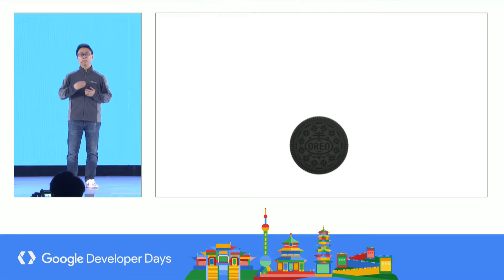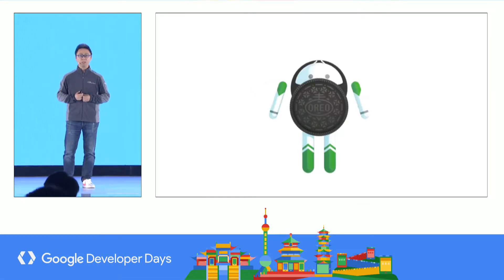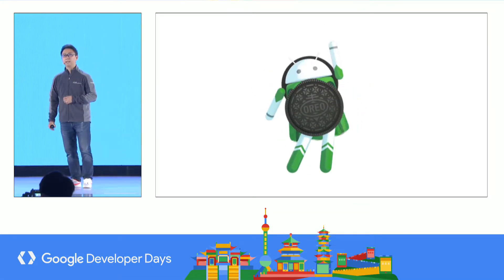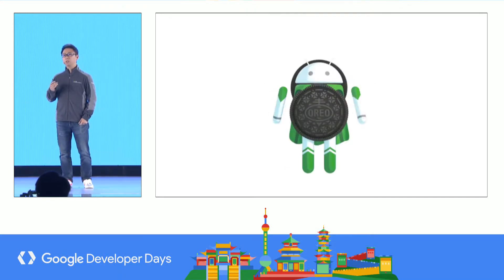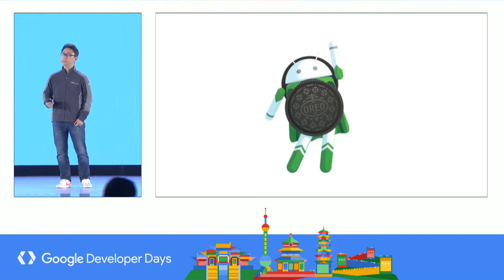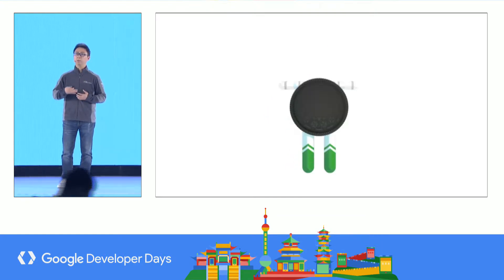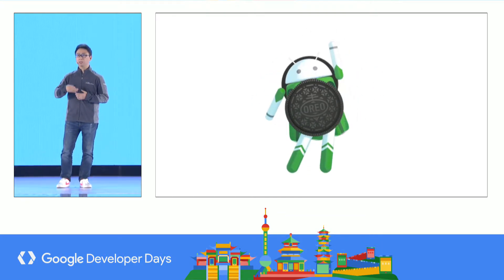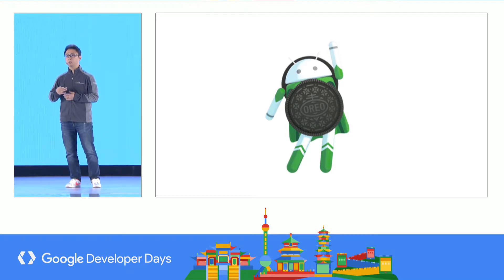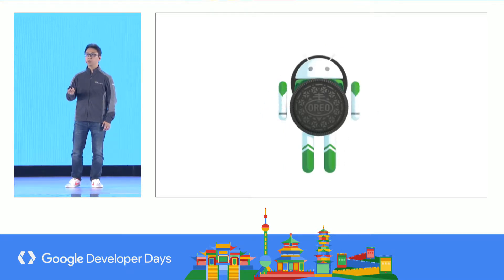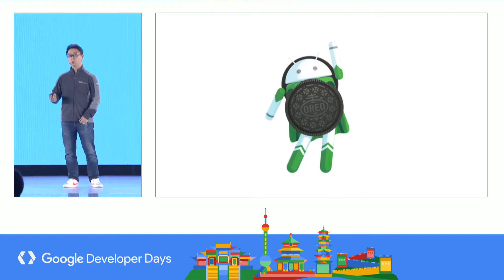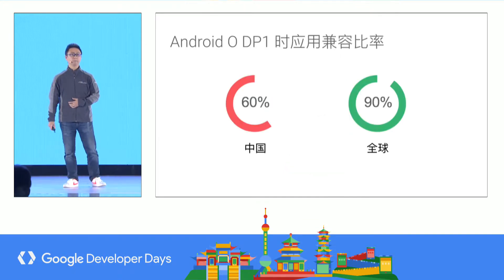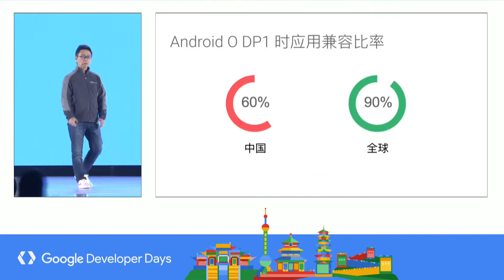As a developer, your application should be compatible with the latest version of Android. I'll cover two things: first, some best practices and experience, and second, some breaking changes. In adopting Oreo, you need to adapt your code or configurations, and I'll talk about some background limitations.